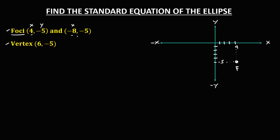Then the other coordinate of foci, so x is negative 8. So negative 1, negative 2, negative 3, 4, 5, negative 6, negative 7, negative 8, and y is negative 5.